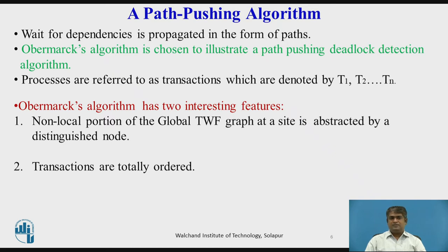A transaction may consist of several sub-transactions that are normally executed at different sites. Overmark's model assumes that at most one sub-transaction within a given transaction can be executed at a time. The sub-transactions communicate synchronously by passing messages.